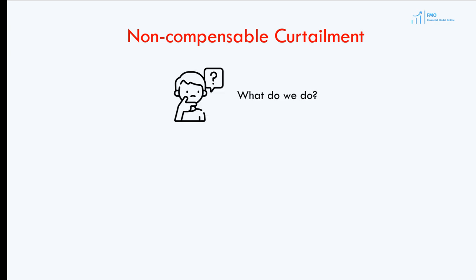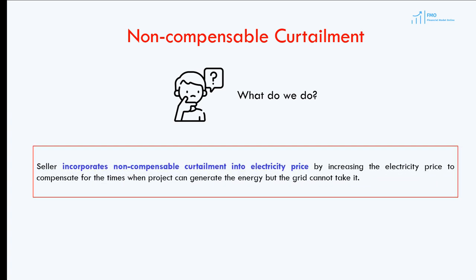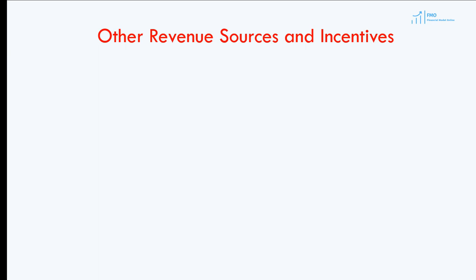The off-taker has to compensate the energy seller for compensable curtailment. For non-compensable curtailment, the energy seller typically increases the energy price in the PPA to offset the estimated energy sales reduction caused by non-compensable curtailment. The PPA for renewables may also include additional revenue sources or incentives.